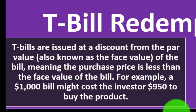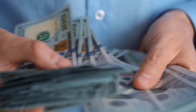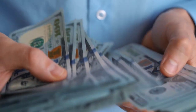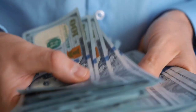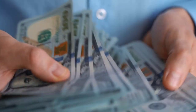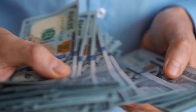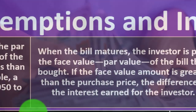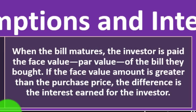For example, a $1,000 bill might cost the investor $950 to purchase. Then at maturity — 52 weeks, 26 weeks, or whatever — you're going to receive the full $1,000. They give you $1,000 instead of the $950 you paid, because you've basically earned interest on it. When the bill matures, the investor is paid the face value, par value of the bill. If the face value amount is greater than the purchase price, the difference is the interest earned for the investor.